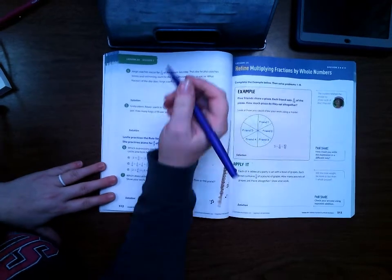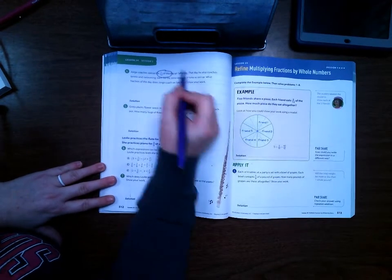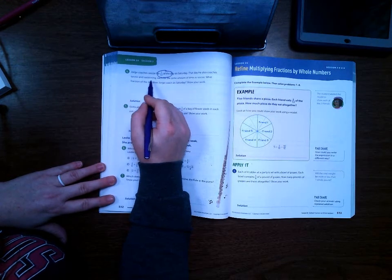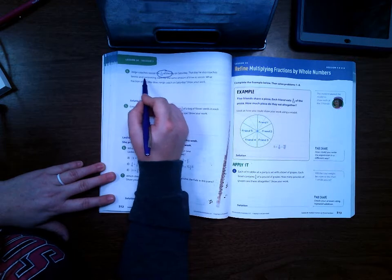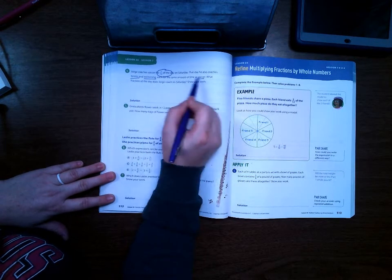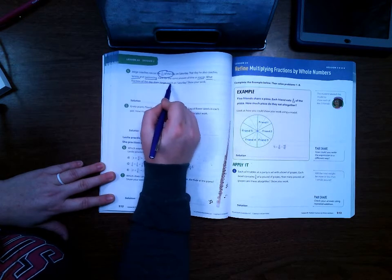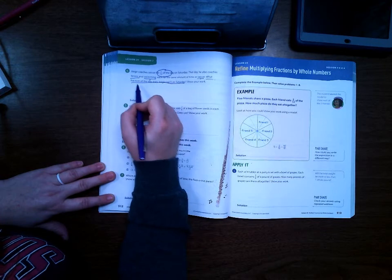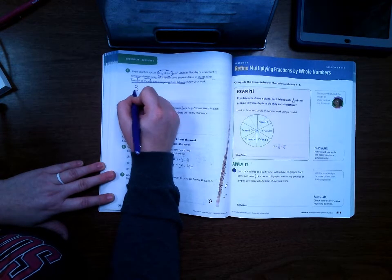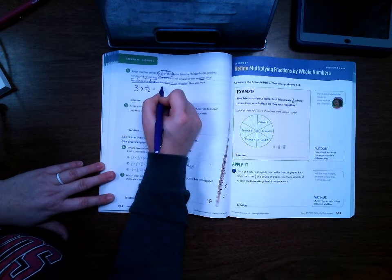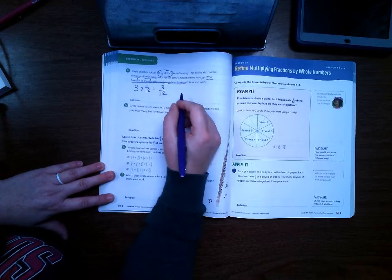Page 512. George coaches soccer for one-twelfth of the day on Saturday. That day, he also coaches tennis and swimming, each for the same amount of time as soccer. What fraction of the day does George coach on Saturday? Well, he does soccer, swimming, and tennis. So that's three times one-twelfth. So three-twelfths of the day.